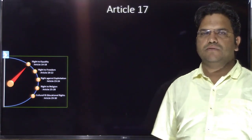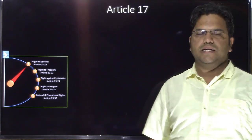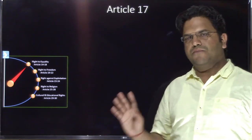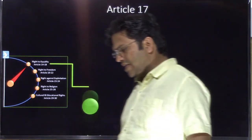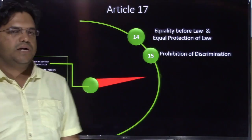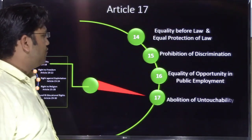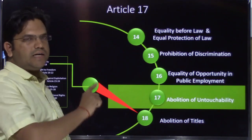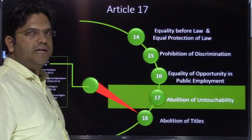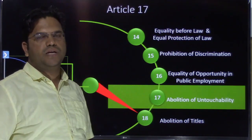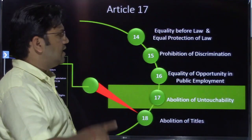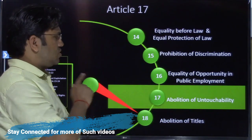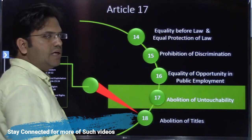Hello everyone. In this video we are going to discuss Article 17, that is the fourth in Right to Equality. There are five articles that form Right to Equality, starting from Article 14 to Article 18. We have already discussed three other articles — Article 14, Article 15, and Article 16. In case you haven't watched those videos, the link is available in the i-button. Coming back to Article 17.